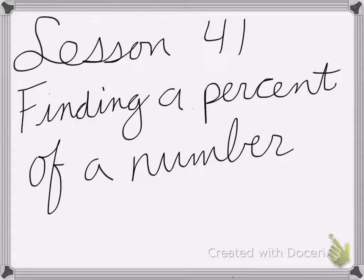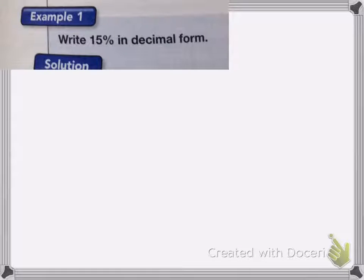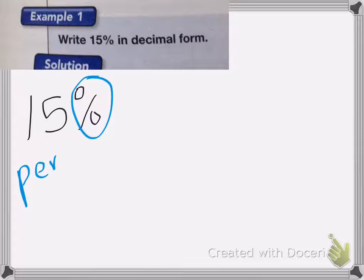All right, so lesson 41 is finding a percent of a number. So here we have, right, 15% in decimal form. So if you remember, 15%, this percent sign means per hundred.